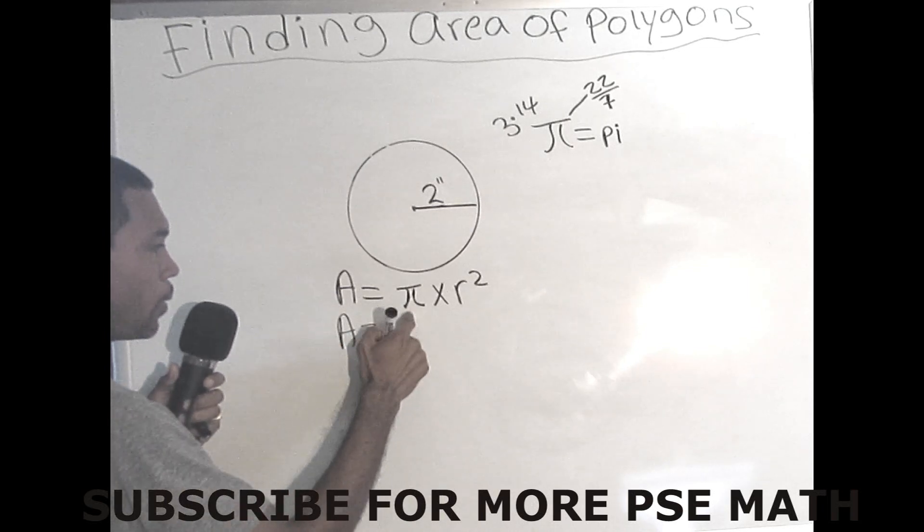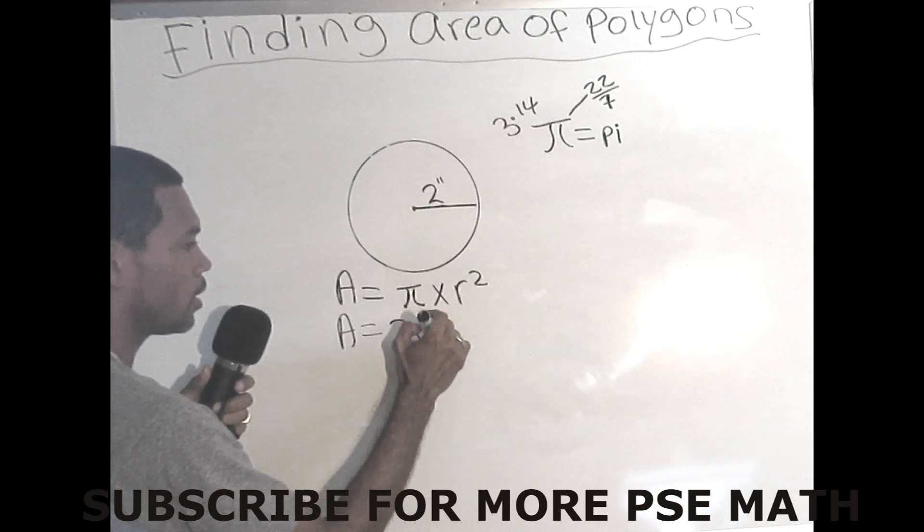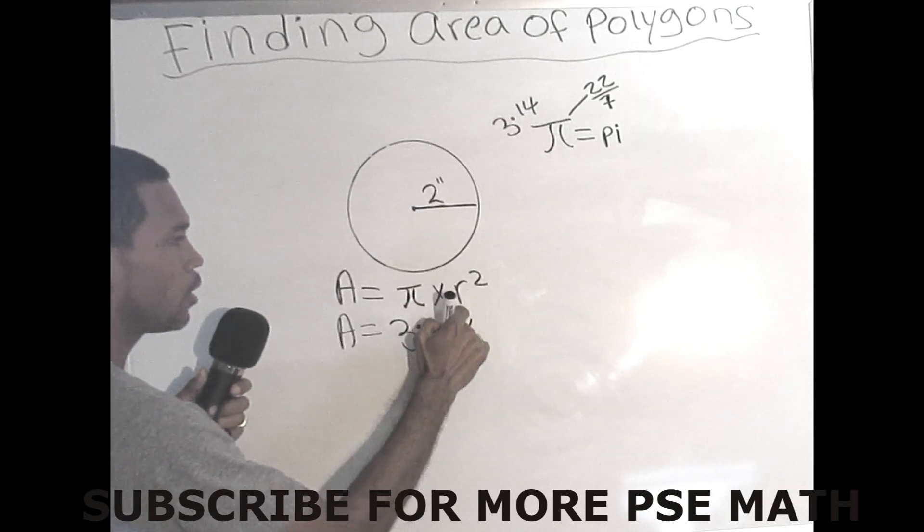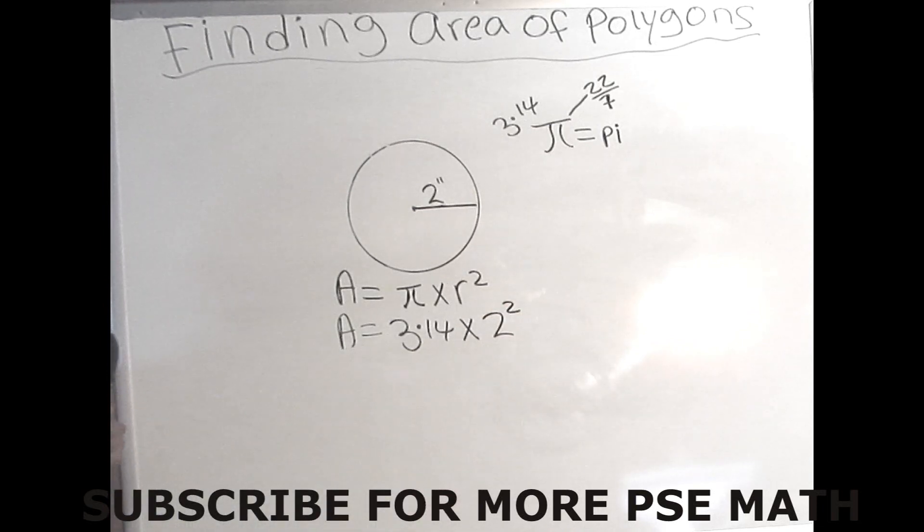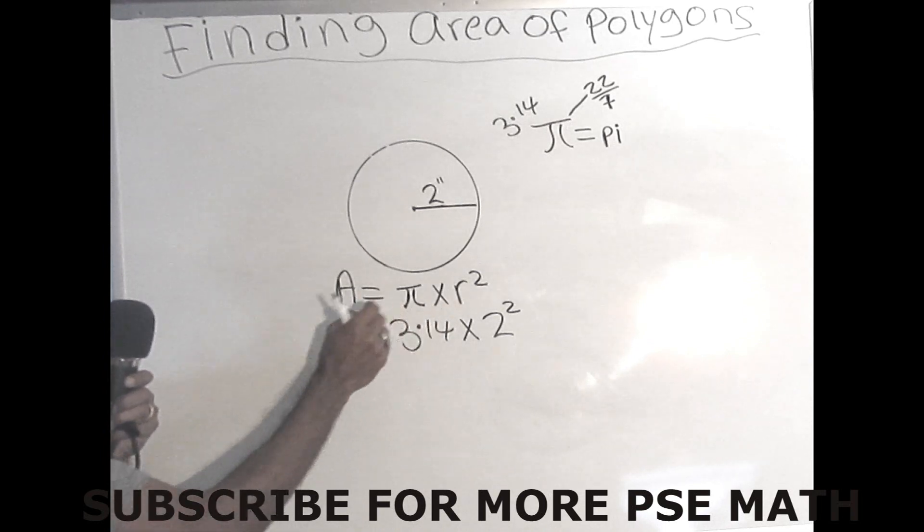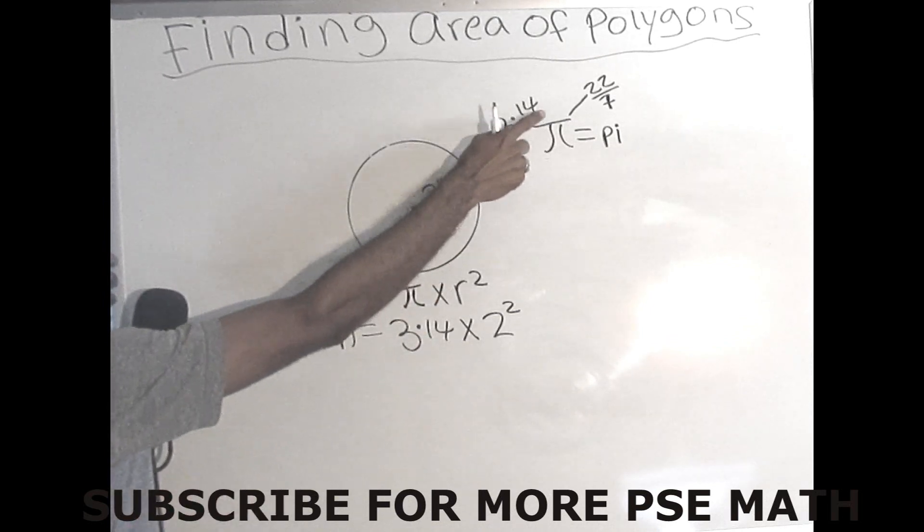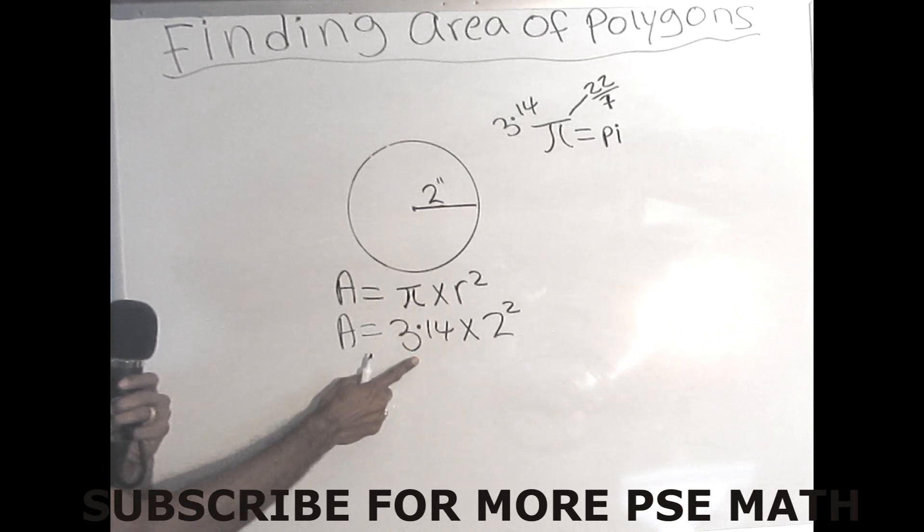We'll start with pi as 3.14, then times your radius squared, which is 2. So that's 2 squared. So you have seen what we did. We convert each of these into numbers. So pi will always represent 3.14 or 22 over 7. In this case I'm using pi as 3.14.